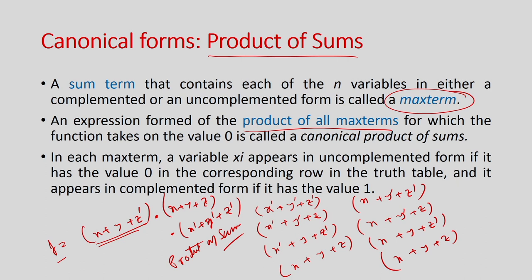Both SOP and POS are canonical forms. Intuitively, with three variables there are 8 possible values, and each maps to either a product term or a sum term. A function in SOP form is 1 for certain minterms and 0 for others. If two functions f and g are equivalent, they will have the same minterms equal to 1, which is why the canonical form provides a unique representation.